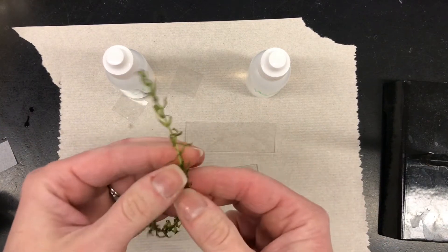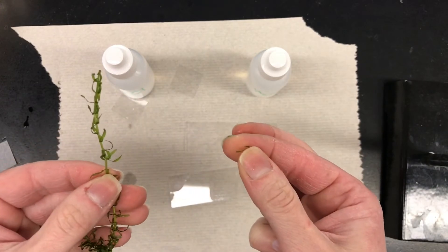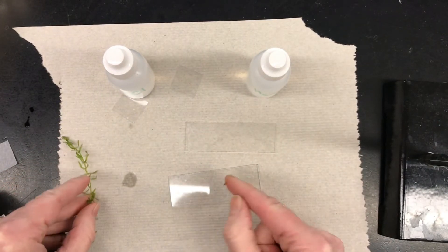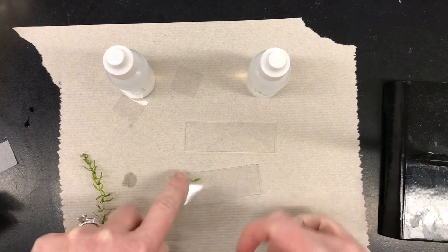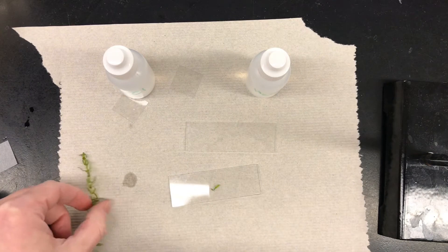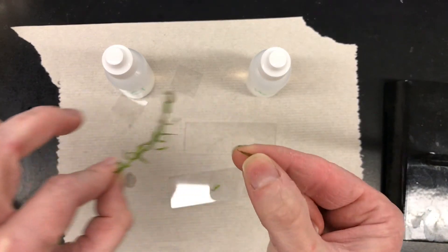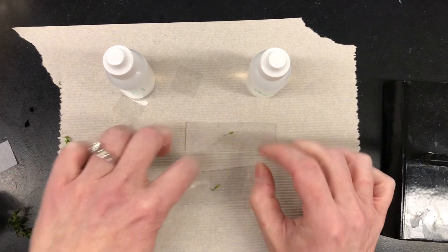Take your Elodea and take one little leaf off. See the little leaf? And you place it right in the center of your slide. We're going to do that one more time. Take off one little leaf, place it right in the center of your slide.